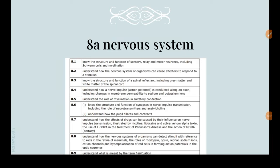Hello everyone, today we're going to do the second part of the Unit 5 content, starting with 8a. First, they want us to know the function of different types of neurons, including Schwann cells and myelination.